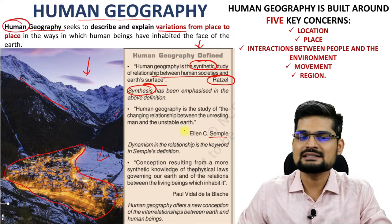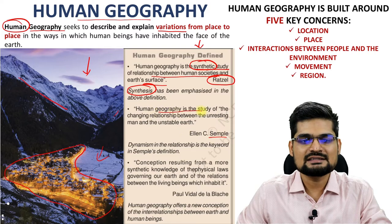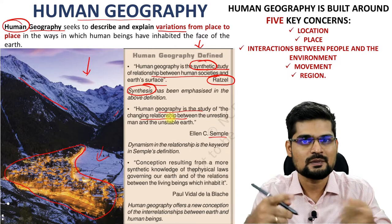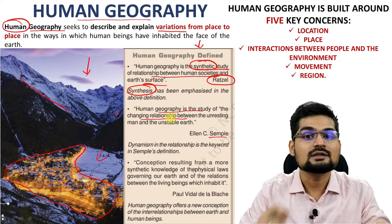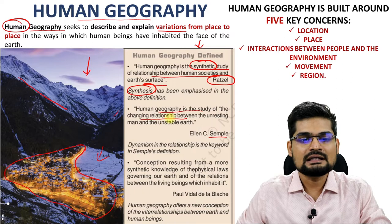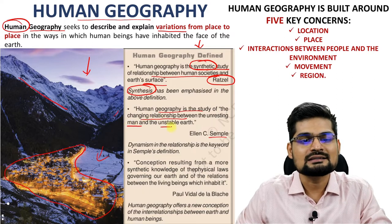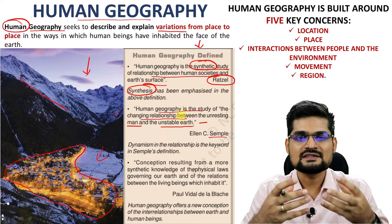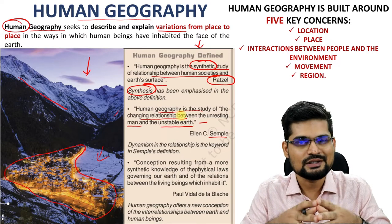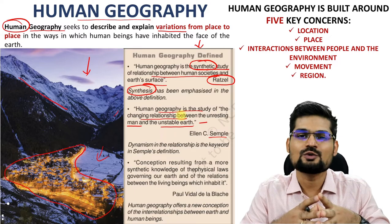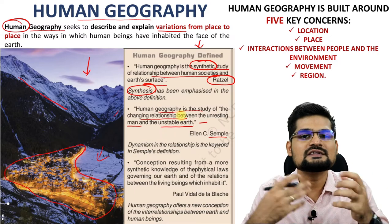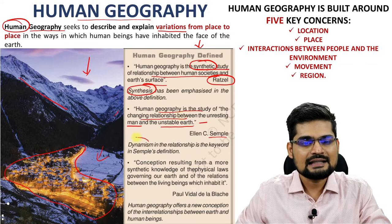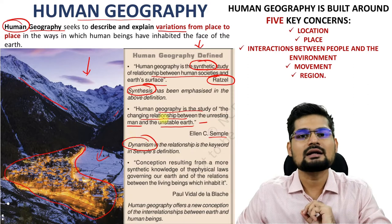If you look into Churchill Semple's definition, human geography is the study of the changing relationship — a dynamic relationship that keeps changing from one point on the earth to another — between the unresting man and unstable earth. Here two components have been clearly defined: the human-centric approach towards geography, and dynamism as the key part in the relationship.